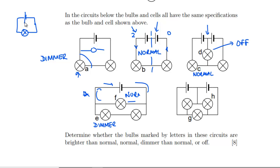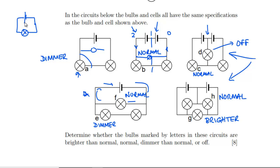The last circuit looks complicated but it's just a variation on the second one — two cells with two bulbs. If you ignore G, it's exactly the same as the second circuit; G is added in parallel, like sticking a bulb across the second circuit. So H is going to be the same as B, which is normal. G has one bulb with double the cell, so G is going to be brighter than normal — it has double the potential difference on it.